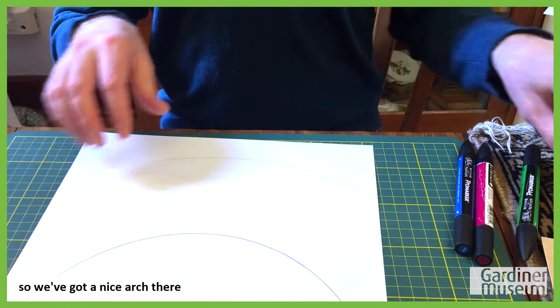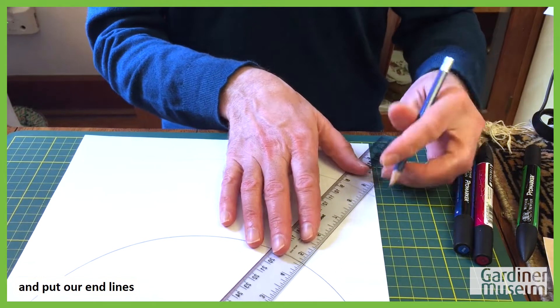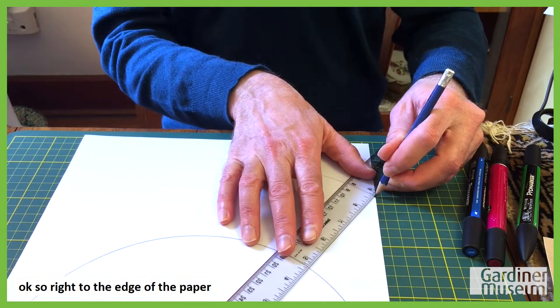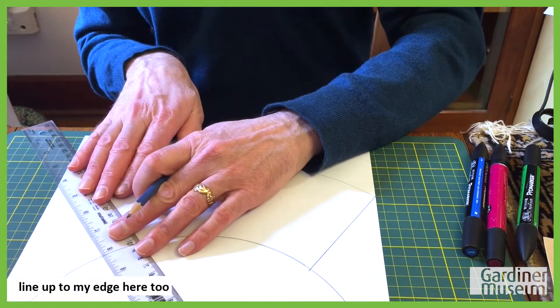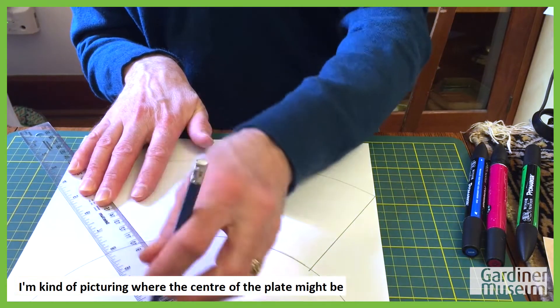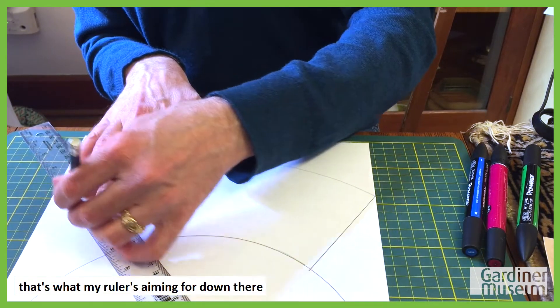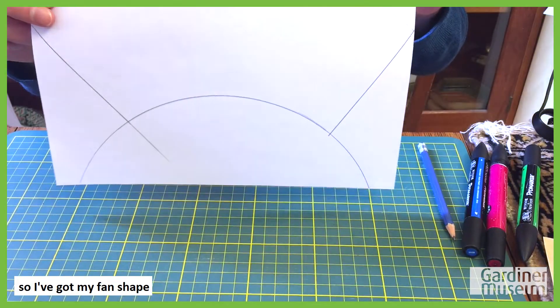So we've got a nice arch there and we're going to come in with our pencil and put our end lines. Right to the edge of the paper, it's always good. Make it as big as possible. Come over to my edge here too, put a line on here. I'm kind of picturing where the center of the plate might be, and that's what my ruler's aiming for down there. So I've got my fan shape.